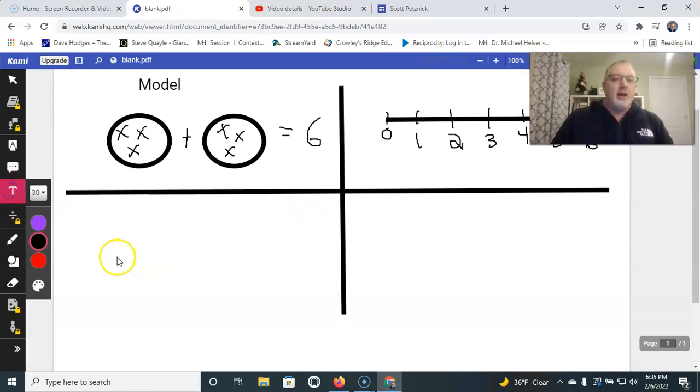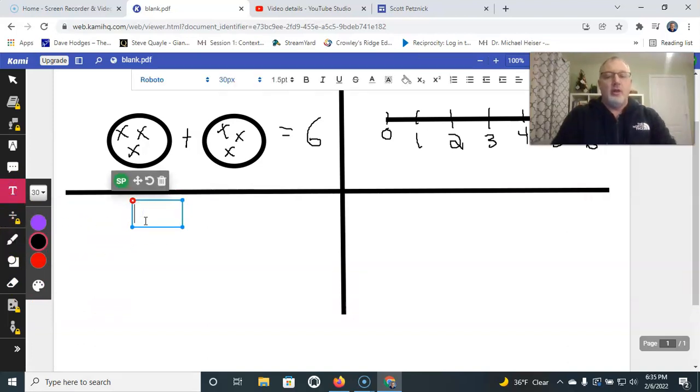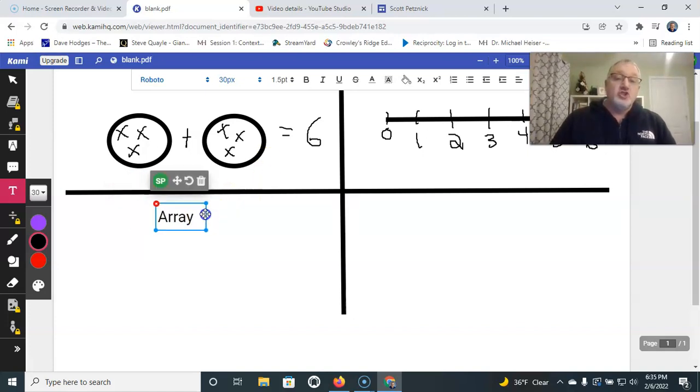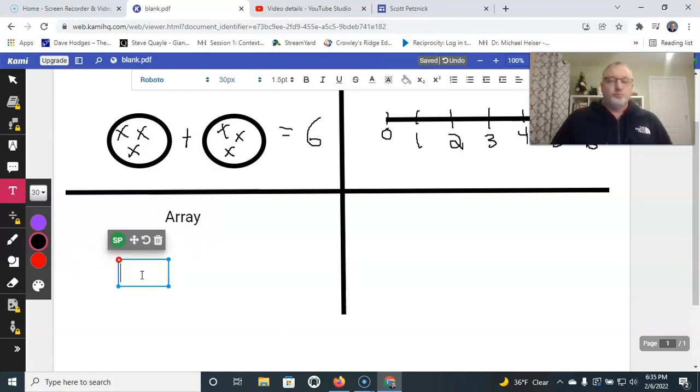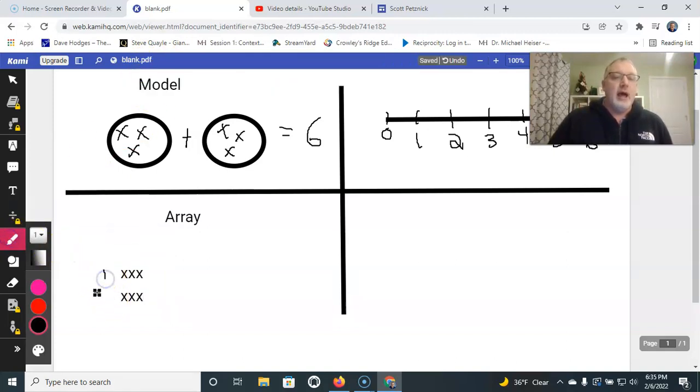Now another way of modeling multiplication is what we call an array. An array is, in essence, just area. An array is a model or a rectangle that shows your length times your width. So, again, we're using our model of 2 times 3. I have x's. I have 3 x's this way. I hit return, so I have 2 down, and then I have 3 again. So, in essence here, I have 2 times 1, 2, 3. So, again, I have 2 times 3, which gives me 6.